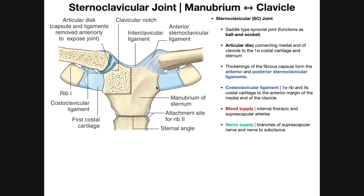On the patient's left side, we can see the joint capsule between the clavicle and the manubrium — the SC joint capsule. There are thickenings of the joint capsule both anteriorly and posteriorly, called the anterior and posterior sternoclavicular ligaments. There's another ligament that connects the costal cartilage of rib one to the clavicle, called the costoclavicular ligament. These three ligaments — the anterior and posterior sternoclavicular ligaments and the costoclavicular ligament — collectively stabilize the SC joint.